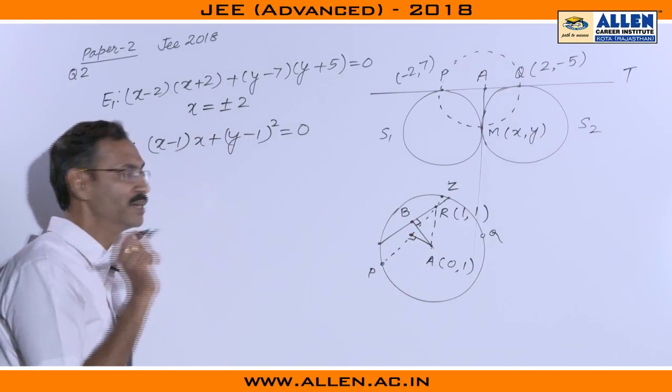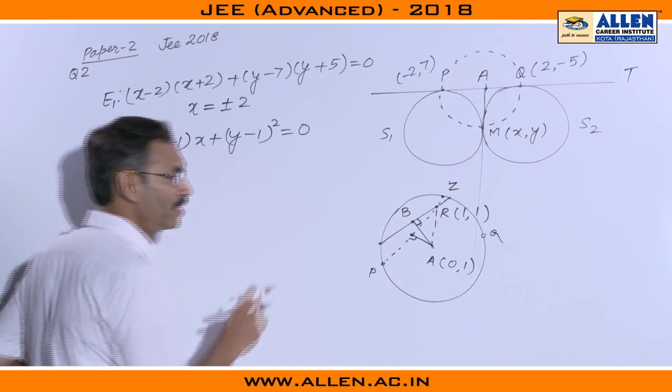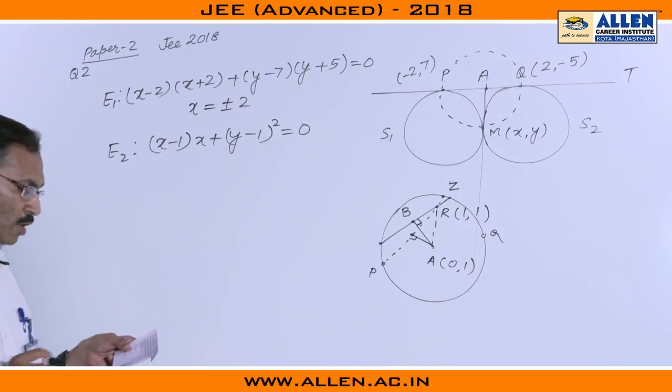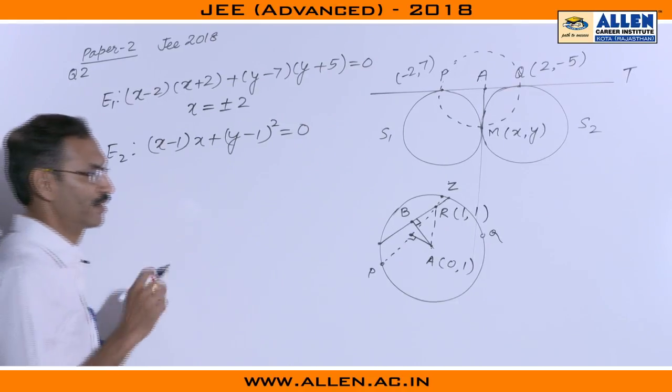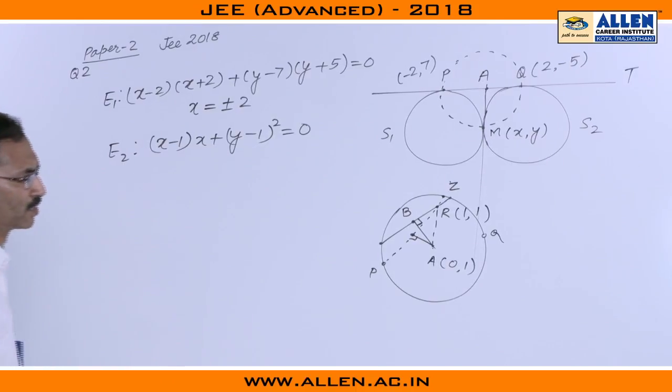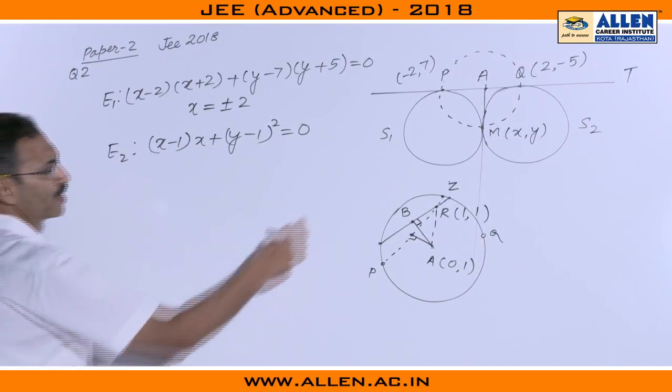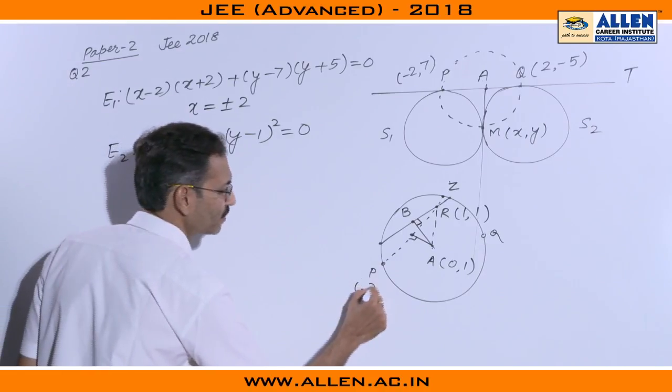This has been very minutely designed, we have to find this foot of perpendicular. And they provided this in the option, option B says the point 4 by 5 comma 7 by 5 does not lie on E2. This is absolutely correct because this foot of perpendicular we can calculate by first of all calculating the line. This line is P point is minus 2 comma 7.